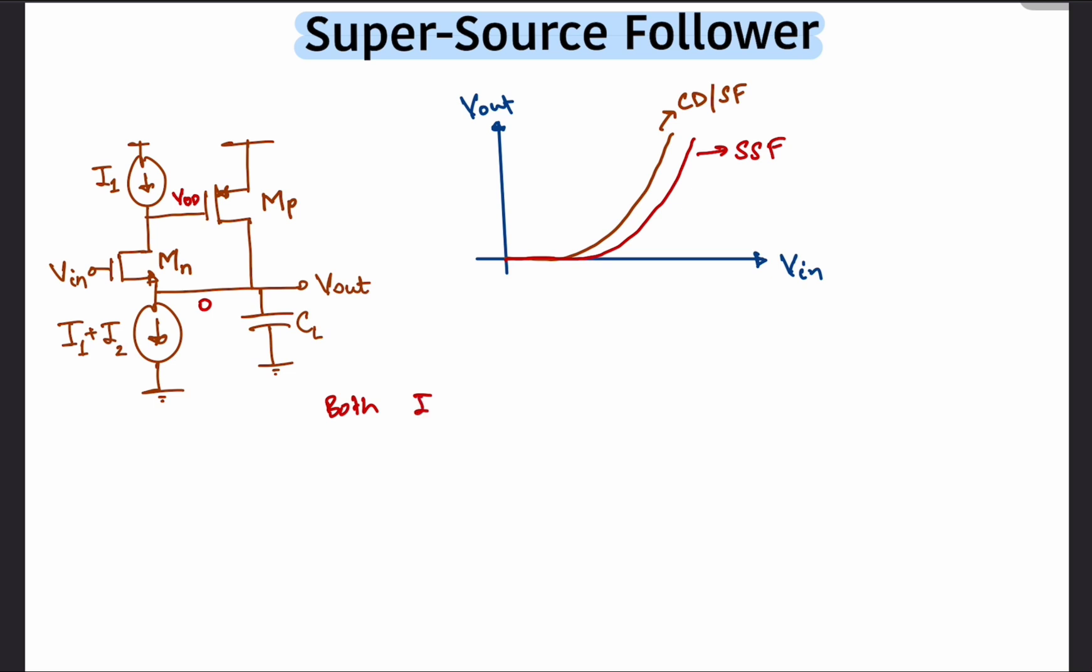Initially when Vn equals 0, Vout would be 0 and the gate of Mp would be at Vdd so that no current flows in the circuit. Now note that I1 will have to turn on first because the I2 current can only flow through Mp.